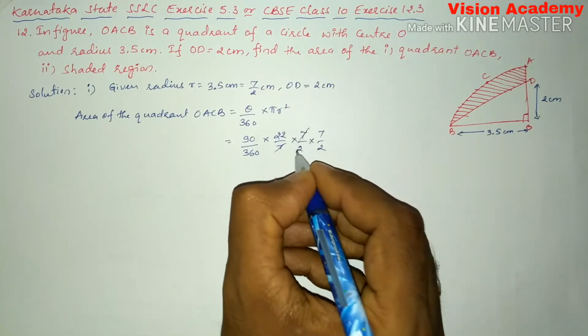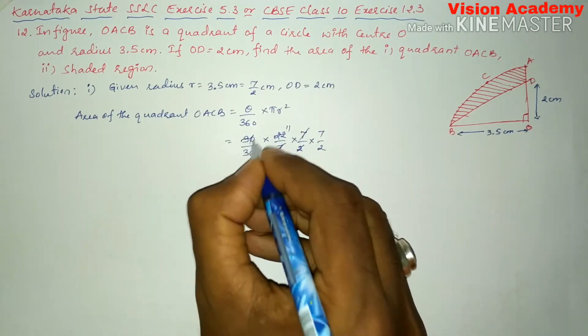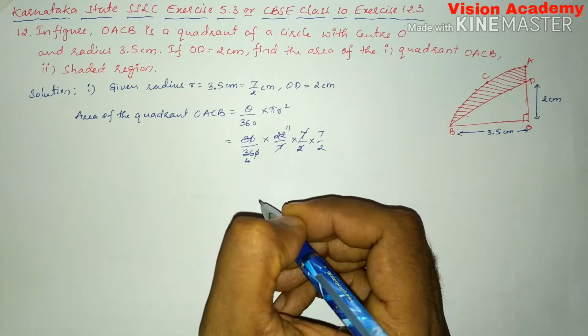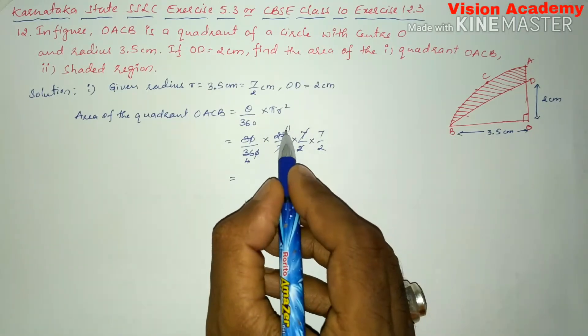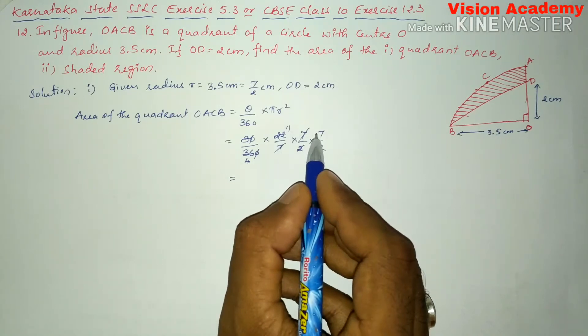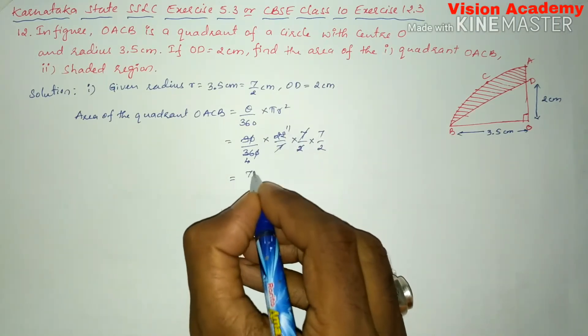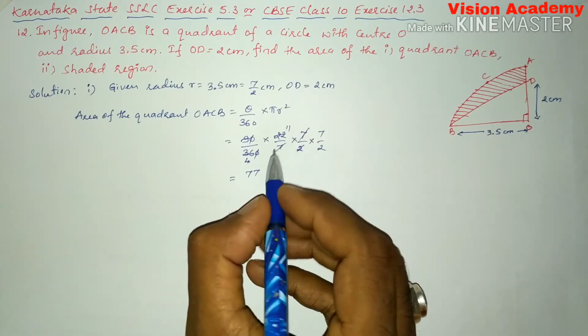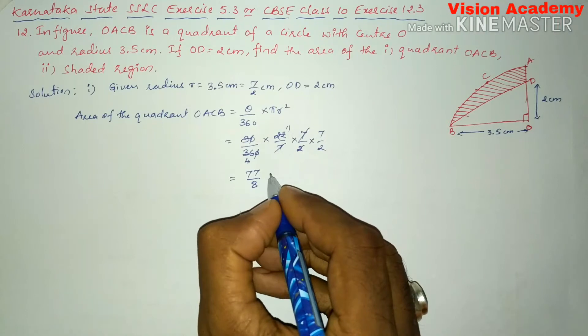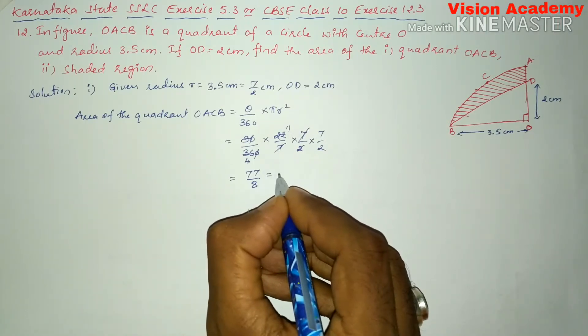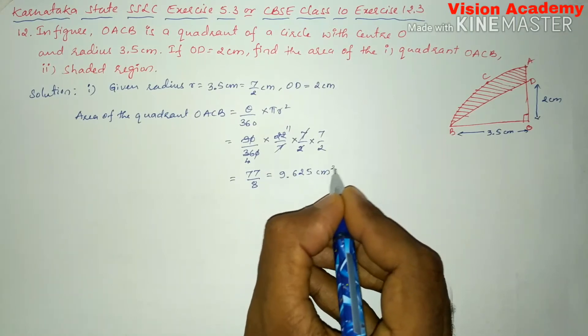So here, the 7s will get cancelled, and we simplify further. Now, after simplification, we multiply: 7 into 11 is 77 divided by 8. So this results in 9.625 cm squared.